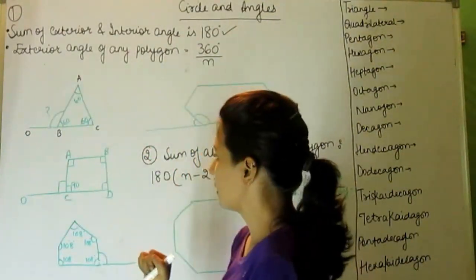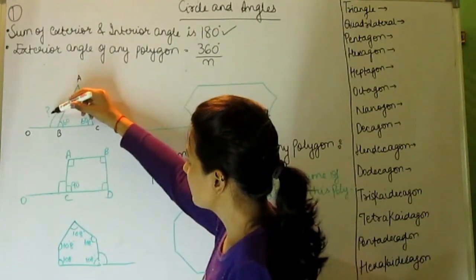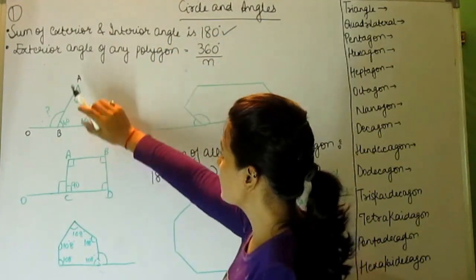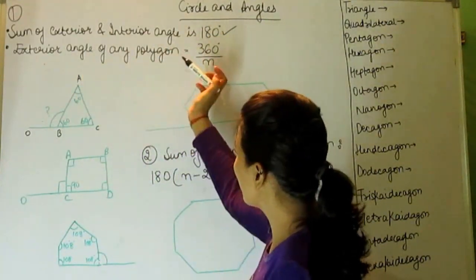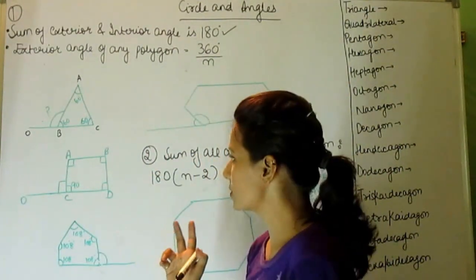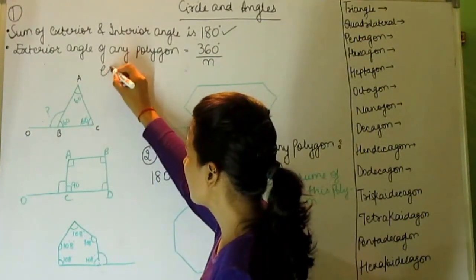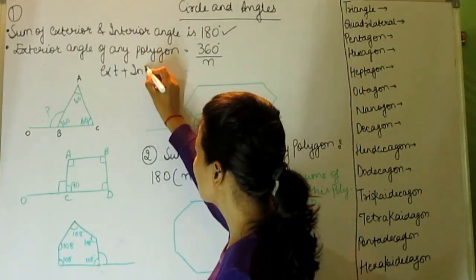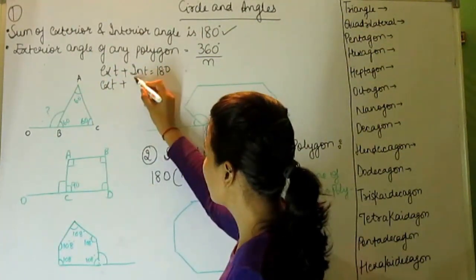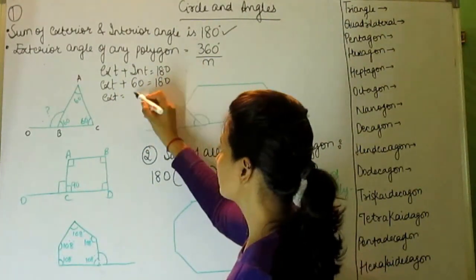We have two methods to solve this. First, the sum of exterior and interior angles is 180 degrees. Exterior plus interior equals 180 degrees. The interior is given as 60 degrees, so the exterior angle will be 120 degrees.